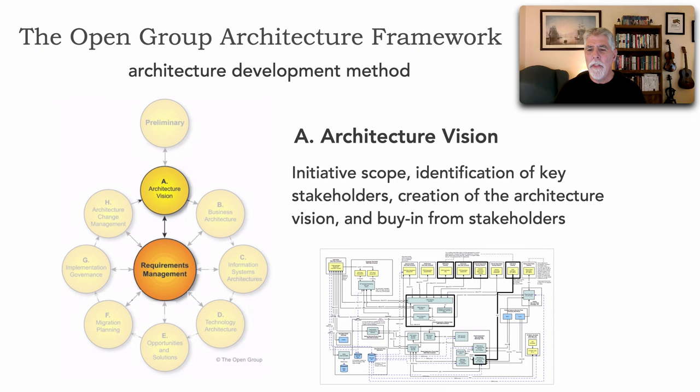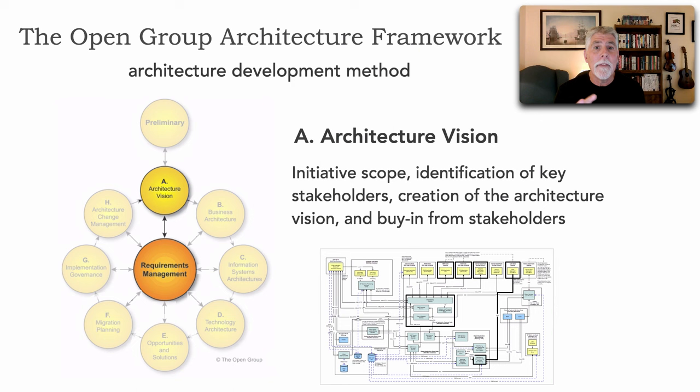Everything starts with Phase A, the Architecture Vision. This is the initiative scope. It really defines the scope of the changes that are necessary and identifies all the key stakeholders involved with this particular initiative. It creates that architecture vision of where we're going, and also gets buy-in from all the stakeholders in agreement about the architecture. Once this happens, we start the next three phases, which don't have to go in sequence — they can run at the same time.